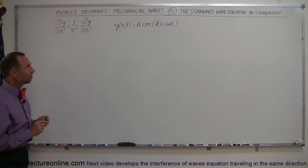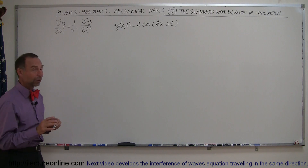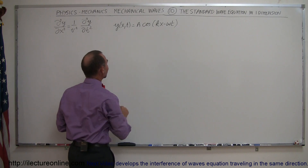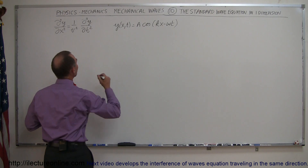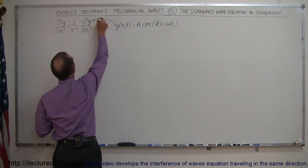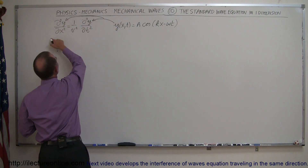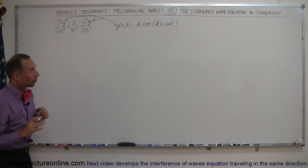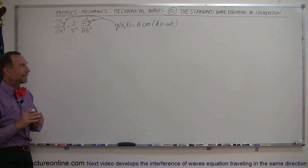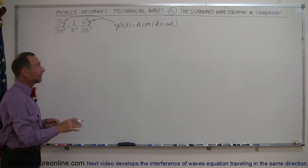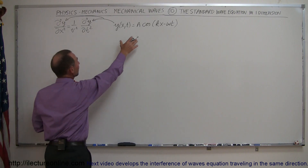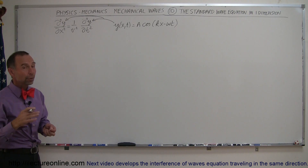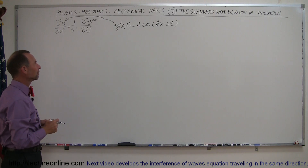What that means is if you take the wave function — and by now we know this is indeed a wave function — and plug that in here and go through this process, and the left side equals the right side, we are indeed dealing with a wave equation. So that means this will indeed be an equation representing a wave. Let's go through the process and see if that's indeed the case.